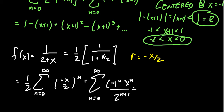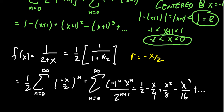In expanded form this looks a little different. The first term is 1/2, the next term is -x/4, then +x²/8, then -x³/16, and this pattern continues on forever.